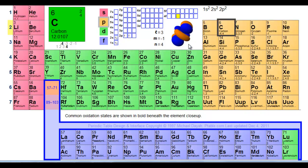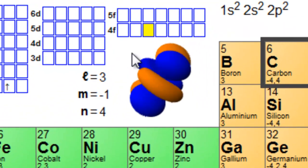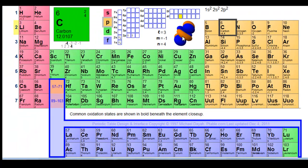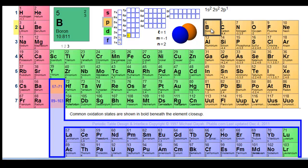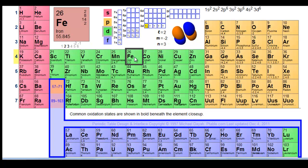Another detail to pay attention to as I go through these examples is the orbital shape diagrams on screen. Starting in the s region, the s orbital has a spherical shape. When we get to the p region, the p orbital takes on a lobe shape with three orientations. If you get down to an element in the d region, the orbitals look very different.